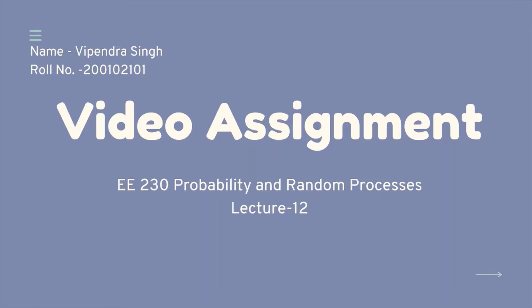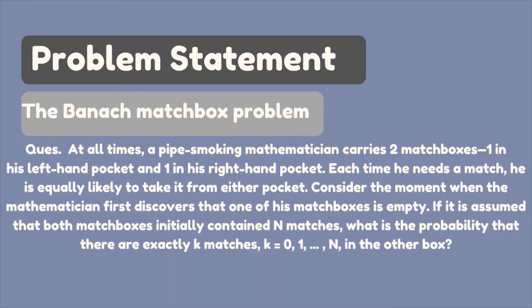The problem is particularly based upon negative binomial random variable. The problem statement is like that at all times a pipe smoking mathematician carries two matchboxes, one is in left hand pocket and one in his right hand pocket. Each time he needs a match, he is equally likely to take it from either pocket.